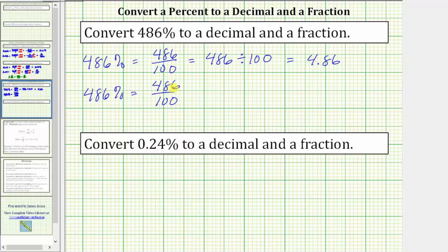The greatest common factor between 486 and 100 is two. To simplify the fraction, we divide the numerator and denominator by two. Simplifying, this gives us the fraction 243 fiftieths.